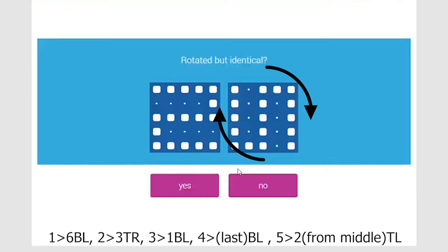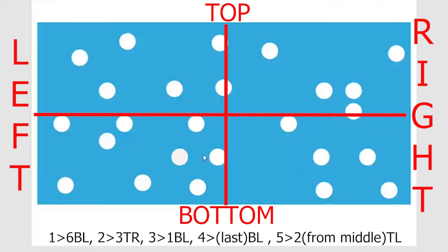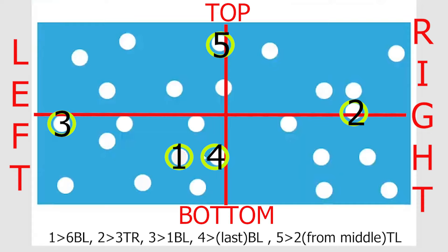Now we find the position of the dots. First dot: position 6, bottom left. Second dot: position 3, top right. Third dot: position 1, bottom left. Fourth dot: last position, bottom left. Fifth dot: second position from center, top left quadrant.